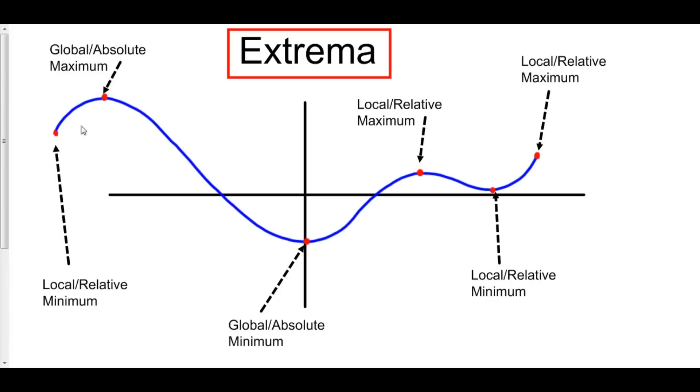So for example, this red point right here at the endpoint, the left endpoint, is called a local or a relative minimum because it is a minimum compared to all the points around it. It is the smallest or the lowest point comparatively.